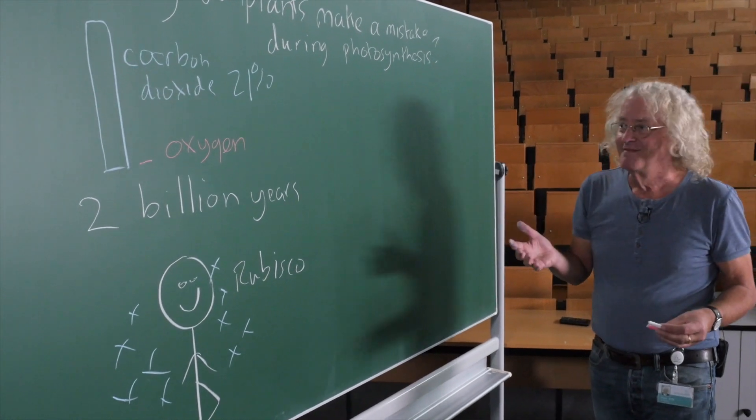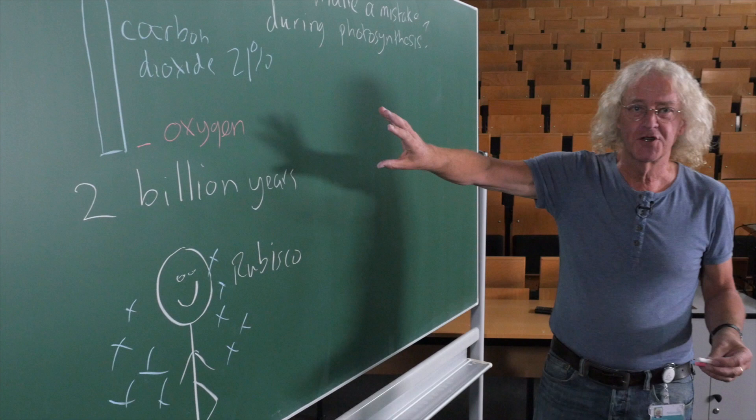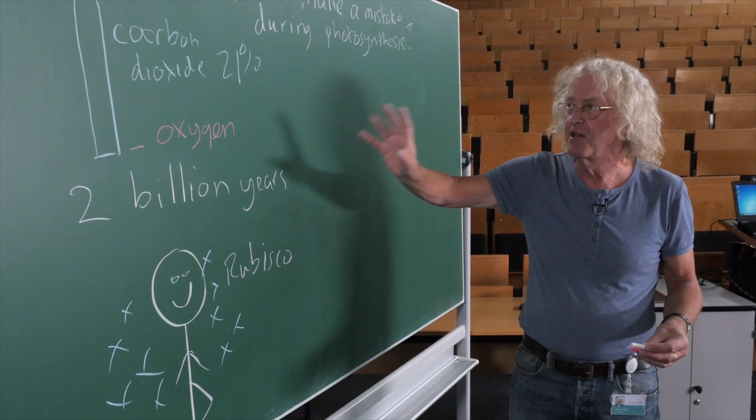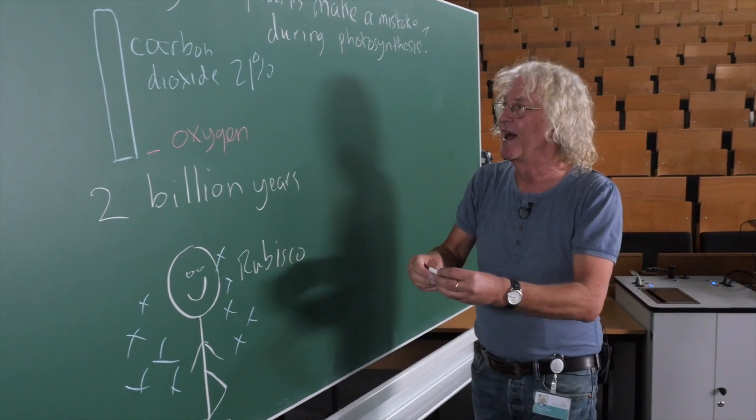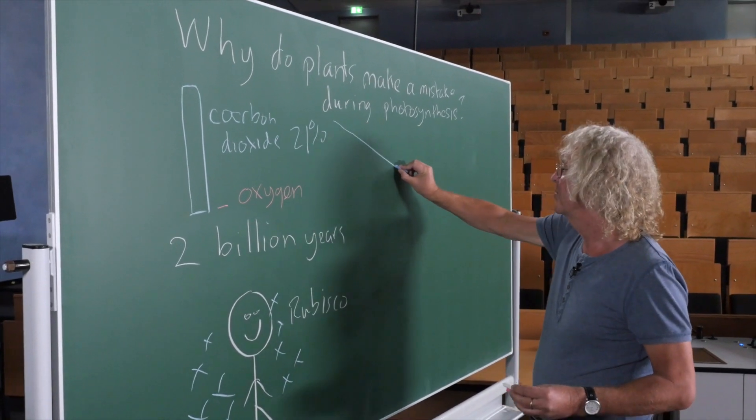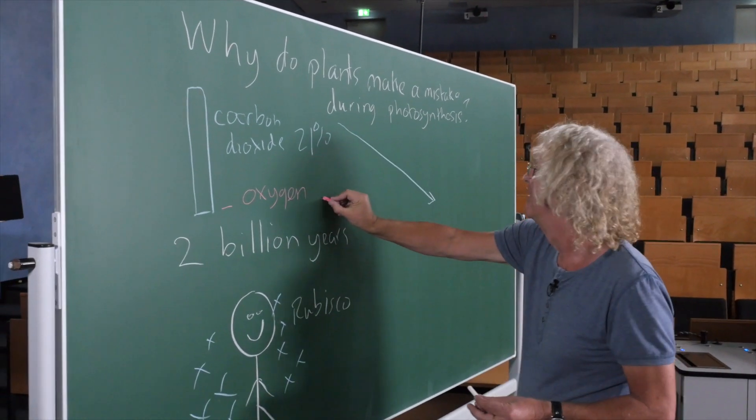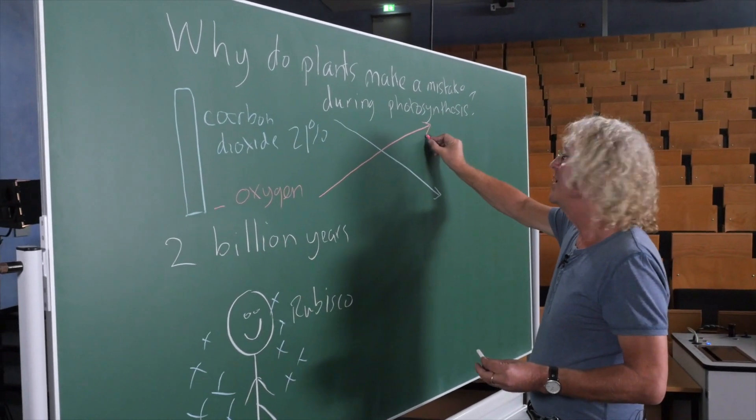Then what happened, as the first organisms started carrying out photosynthesis - these were bacteria, and then algae, and then the plants came onto the land. And you can imagine, as photosynthesis went on, the carbon dioxide concentration in the atmosphere went down, and the oxygen went up.